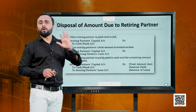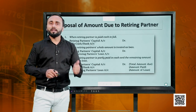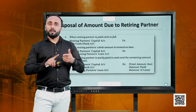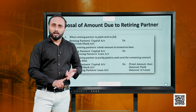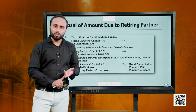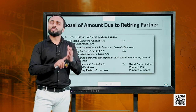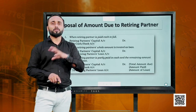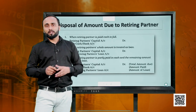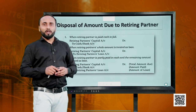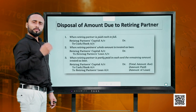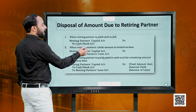Having done all of this, we have calculated the gaining ratio, the goodwill share for the retiring partner, revalued the assets and liabilities, and written off accumulated profits and reserves. Now we calculate the total amount due to the retiring partner and make the payment. If we are making the entire payment in cash or lump sum at one go, we credit our cash or bank account and debit the retiring partner's capital account.